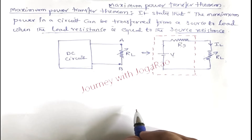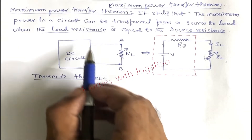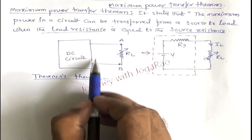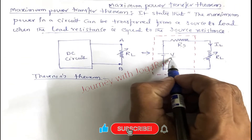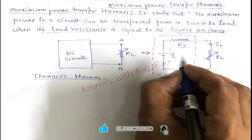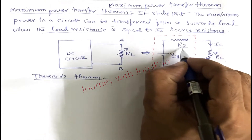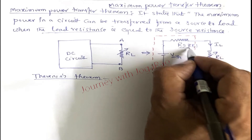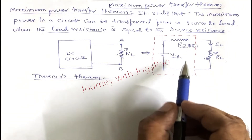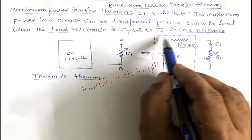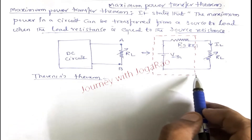Observe this circuit. The Thevenin theorem gives us a circuit with a single voltage source and single resistance. This is the Thevenin voltage and resistance. The Maximum Power Transfer Theorem is equivalent to the Thevenin circuit.